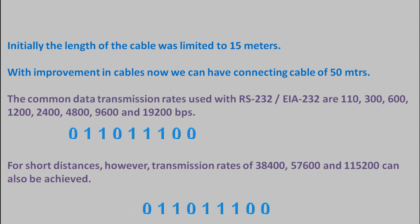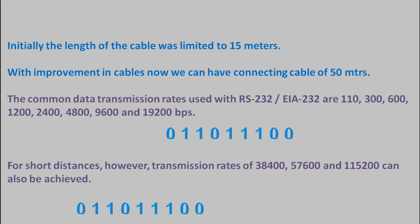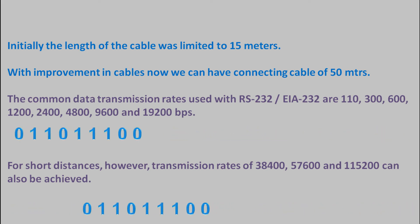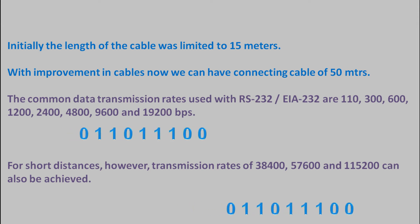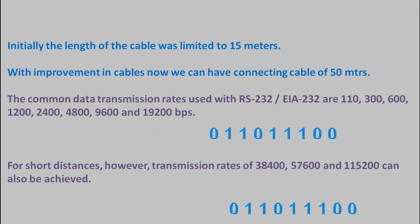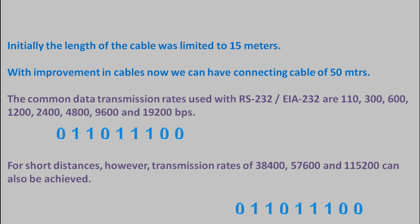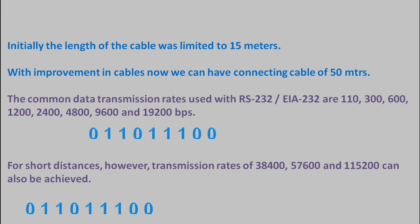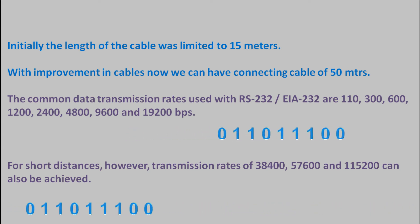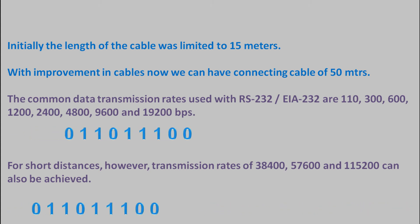Initially, cable length was limited to 15 meters, but with improvements in cables, connecting cables of 50 meters can now be used. The common data transmission rates used with RS-232 are from 110 bps to 19 kbps. However, for short distances, higher data transmission rates up to 115 kbps can also be used.